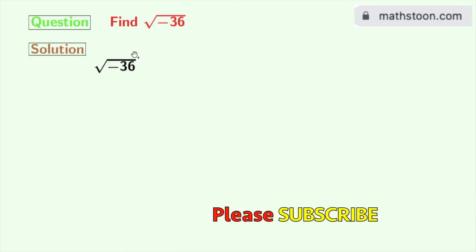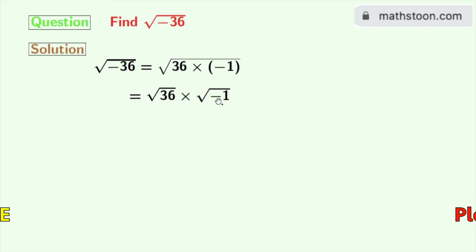This is square root of minus 36. Now we will rewrite this as square root of 36 times minus 1. This can again be rewritten as square root of 36 times square root of minus 1.